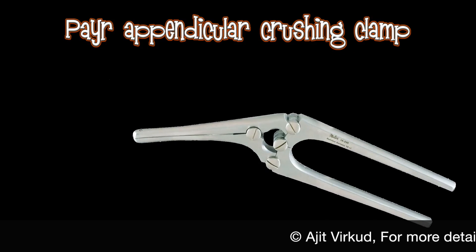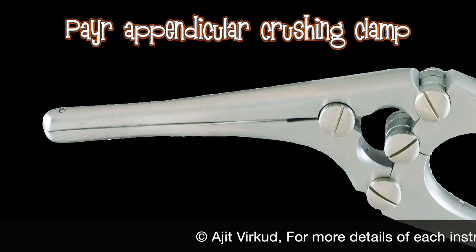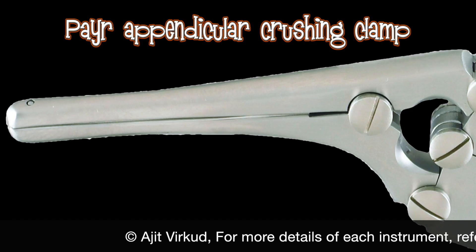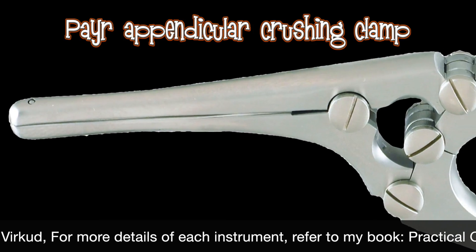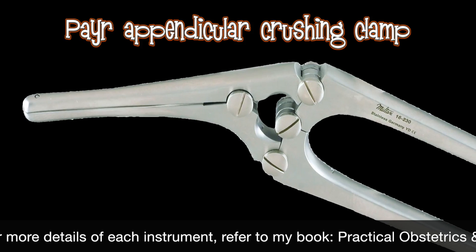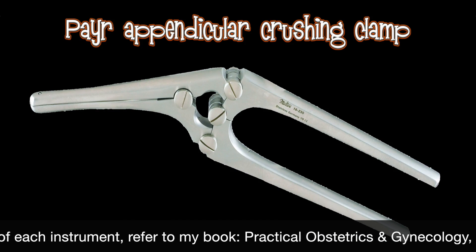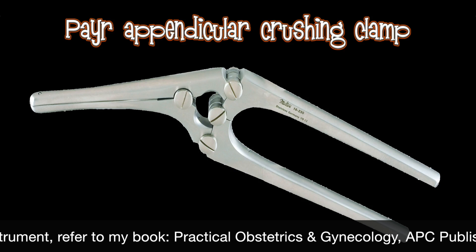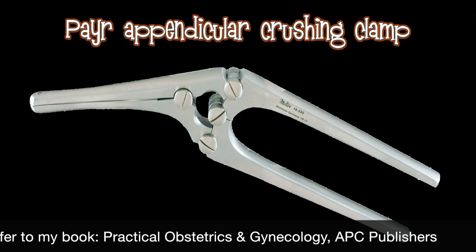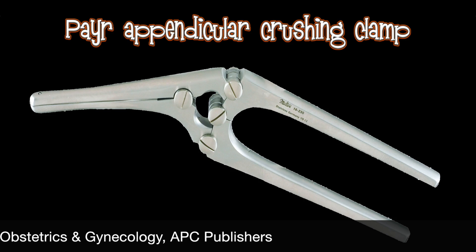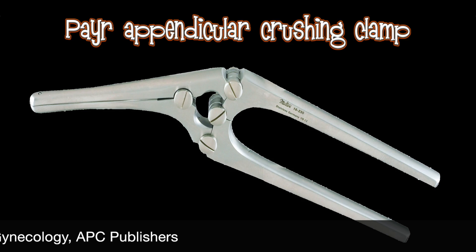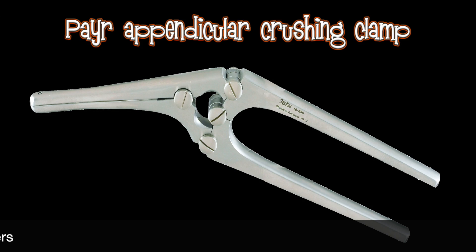Peyer's Pylorus or Appendicular Crushing Clamp has longitudinal serrations on the inner surface. In residency, we used this clamp during mini-laparotomy Pomeroy parallel tubal sterilization. Most surgeons use hemostats for crushing the tubal loop base, but hemostats have transverse serrations that crush the tube along its lumen, leaving microchannels through which sperm can theoretically swim. The Peyer's clamp crushes the tube across the lumen, leaving no scope for sperm to pass through.